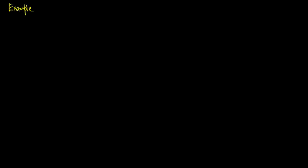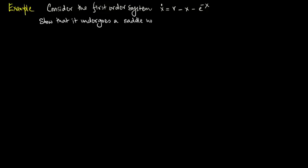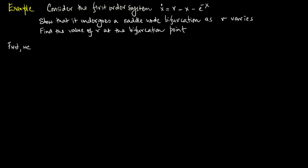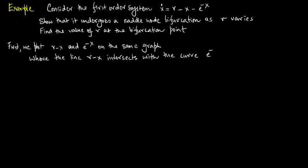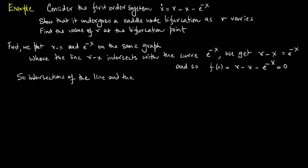Let's consider an example: the first-order system x-dot equals r minus x minus e^(−x). We want to show that it undergoes a saddle-node bifurcation as r varies, and find the value of r at the bifurcation point. We plot r minus x and e^(−x) on the same graph; where the line r minus x intersects the curve e^(−x), we get f(x) = 0, so intersections correspond to the fixed points of the system.